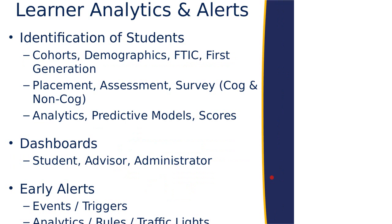One of the things we're really excited about with SSP currently is the ability to bring in analytics and alerts from other systems and get them in the hands of those who work with the student. We can tag students in cohorts, demographics, placement scores, and use predictive analytics — even high school GPAs and other factors — to color-code and create dashboards for the advisor, coach, or faculty member so they have a better understanding of the student and the level of risk they're dealing with.